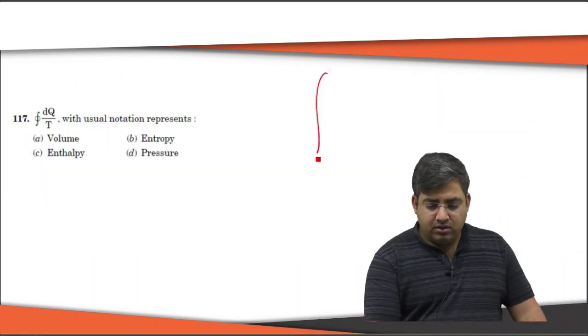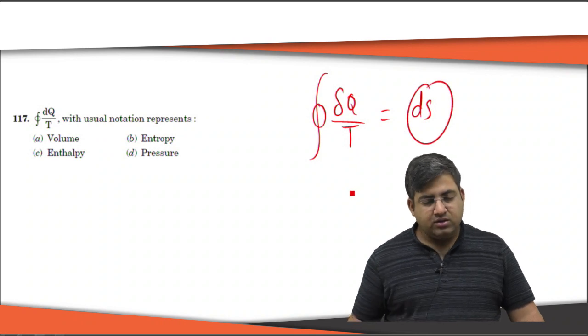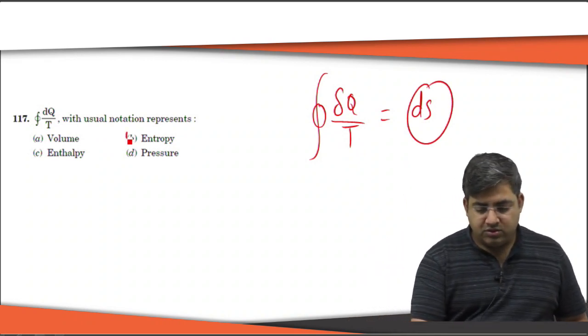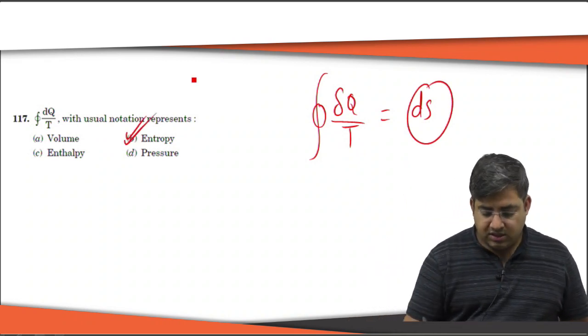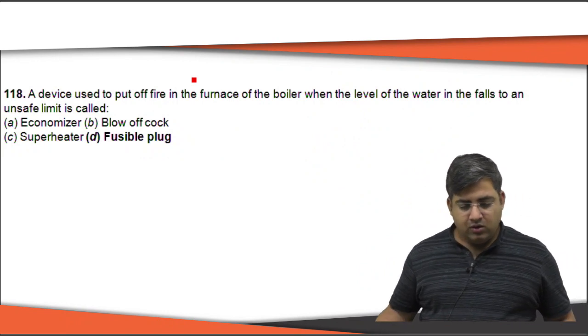The cyclic integral of δQ/T denotes nothing but dS — the change in entropy. So this term denotes entropy. The right answer is B.